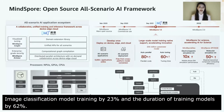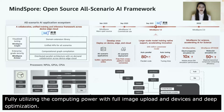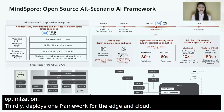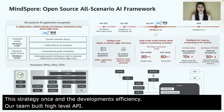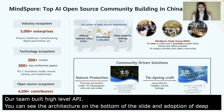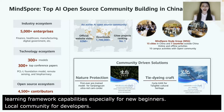Third, MindSpore deploys one framework for devices, edge, and cloud. This 'develop once, deploy everywhere' strategy boosts development and deployment efficiency. Our team also developed a high-level API toolkit for MindSpore called TinyMS, aiming for fast adoption of deep learning framework capabilities especially for new beginners. Since its inception, MindSpore has established an open and global community with more than 1.2 million downloads and more than 20 MindSpore study groups created around the world.